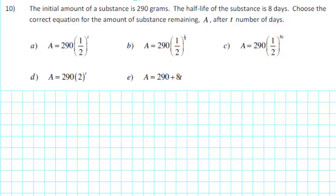The initial amount of a substance is 290 grams. The half-life for the substance is 8 days. Choose the correct equation for the amount of substance remaining A after T number of days.